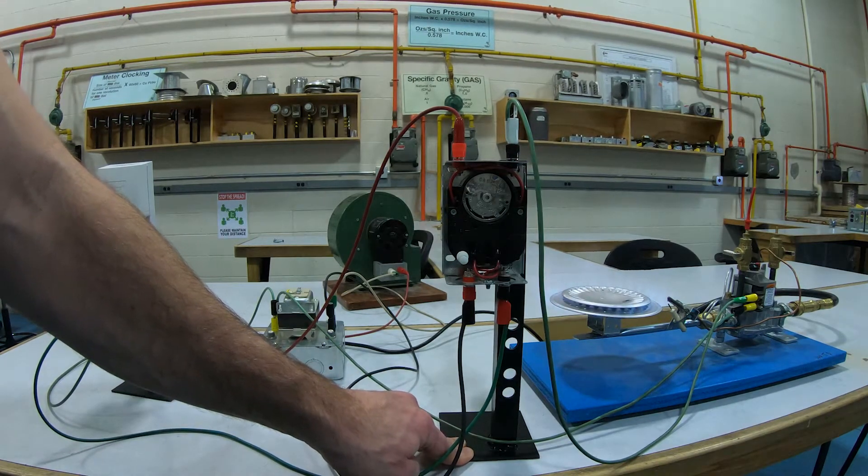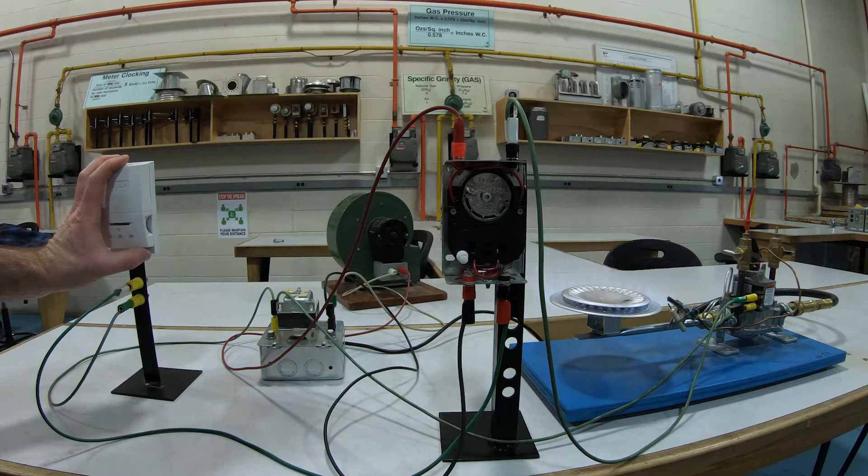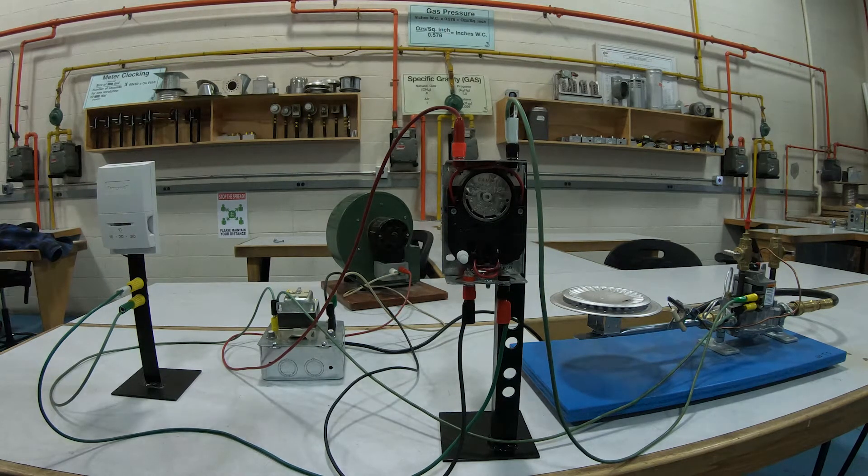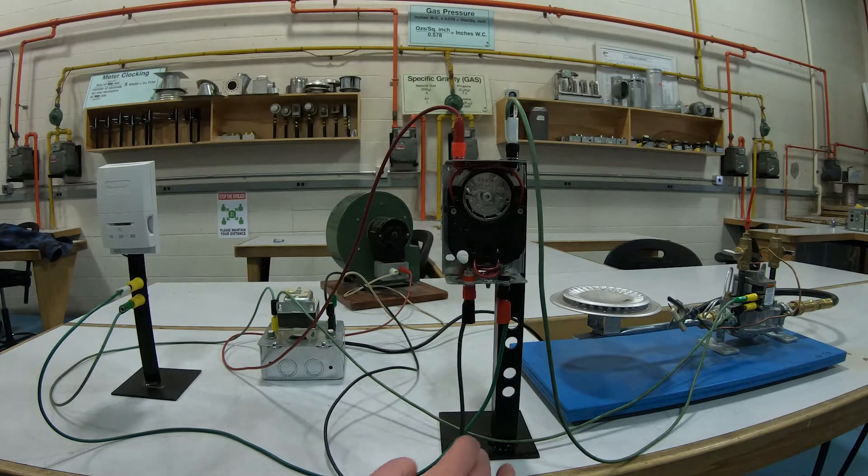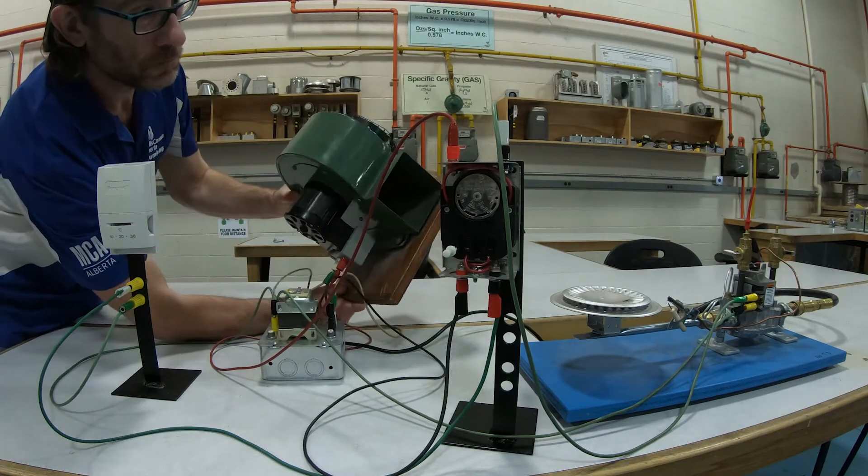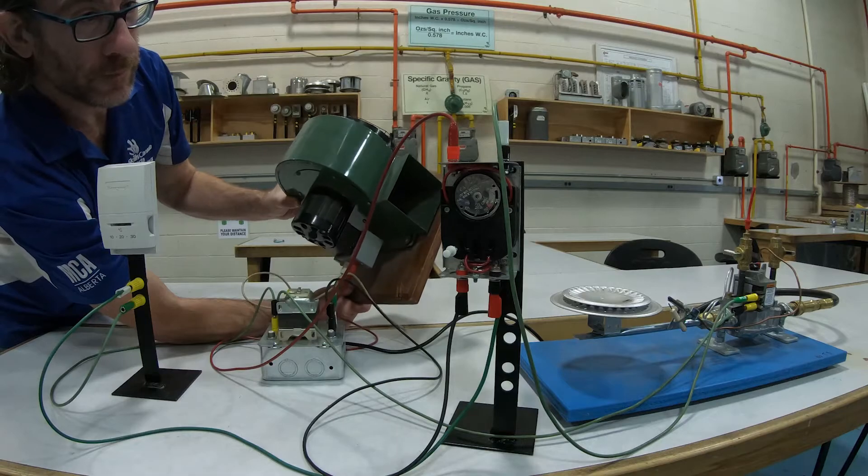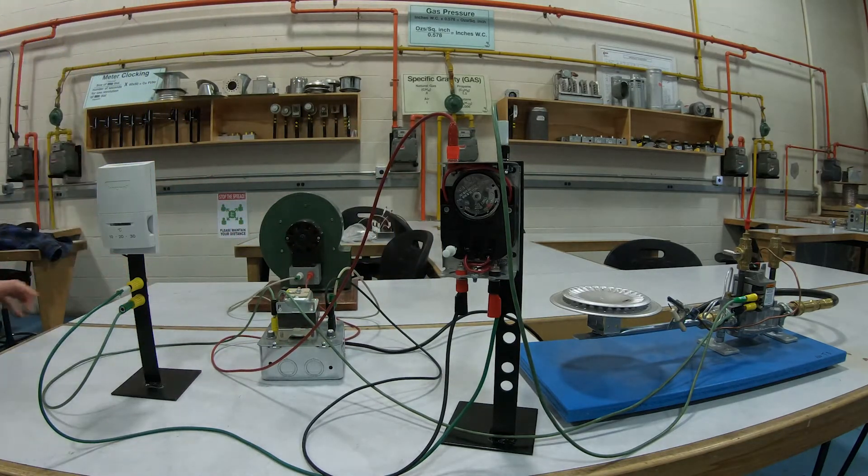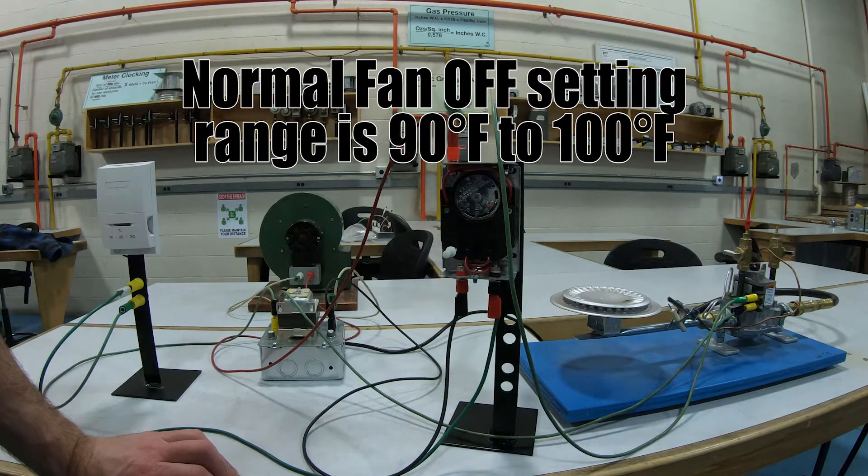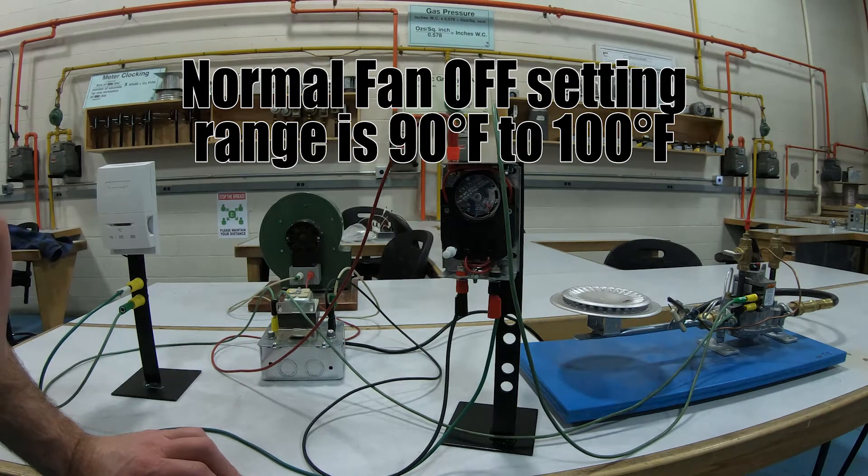Now I'm not going to stick it back in the flame, but what we're going to do is turn our thermostat off, pretend that the furnace or house has been satisfied for heat. And now just to speed things up a little bit, I'm going to use my fan to cool this down because I can. There we go, I cooled down to my fan off temperature, and now we shut down. Fan off temperature is generally between 90 and 100 degrees Fahrenheit.